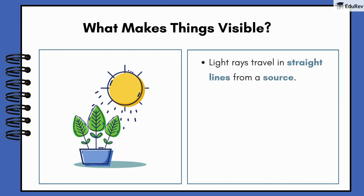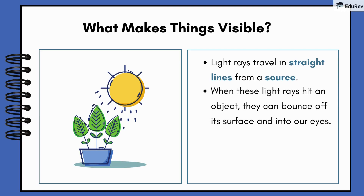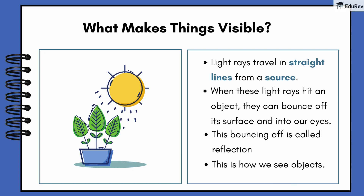Light rays travel in straight lines from a source, like the sun or a lamp. When these light rays hit an object, they can bounce off its surface and into our eyes. This bouncing off is called reflection, and it's exactly how we are able to see objects.